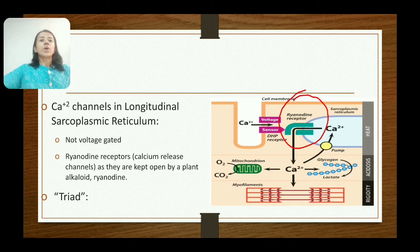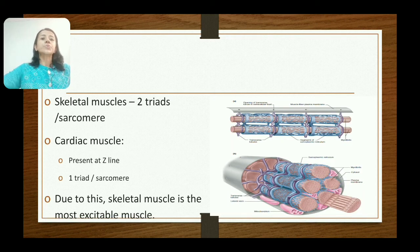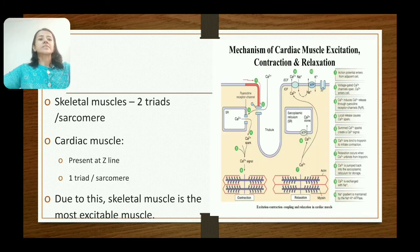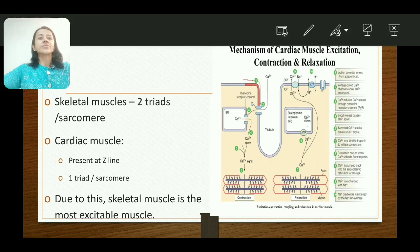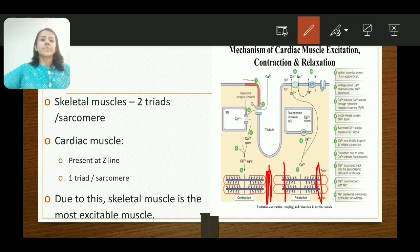There is close proximity of the terminal cisternae and T-tubules. One T-tubule with two terminal cisternae forms a triad. In skeletal muscle, there are two triads per sarcomere, and the triad is present at the A-I junction. Each sarcomere therefore contains two triads. In cardiac muscle, by contrast, the triad is present at the Z-line, so each sarcomere contains one triad. Therefore, skeletal muscle is the most excitable tissue.